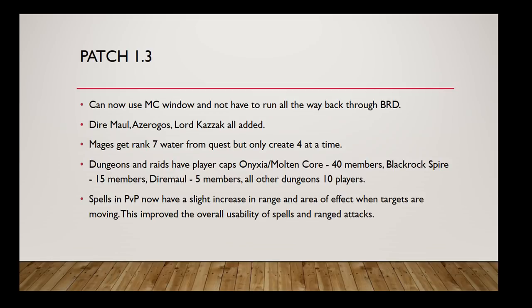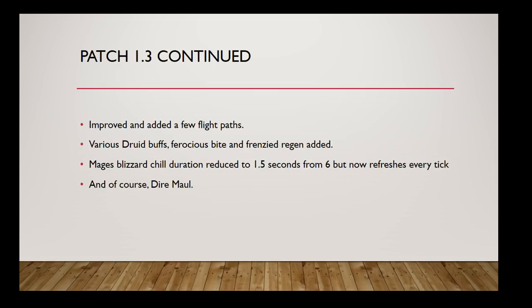Mages got Conjure Water but could only make four at a time. Dungeons got player caps — previously you could raid anything as 40 people from Ragefire Chasm to Molten Core. Now it was five people for the standard dungeon with a few others capped at 15. Spells got a slight increase in range so they could hit moving targets better. More flight paths were improved and added, and various druid buffs made leveling easier. Mage's Blizzard Chill duration was reduced to 1.5 seconds from 6, but now refreshes every tick. Dire Maul was added, and they also added the famous in-game voice for Ragnaros and Major Domo in Molten Core.